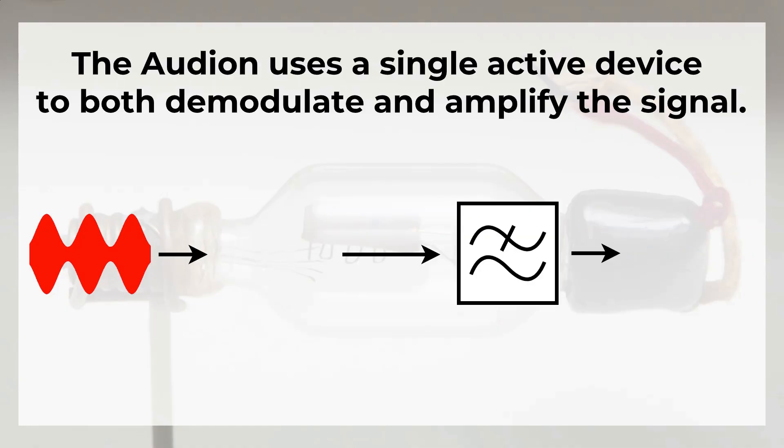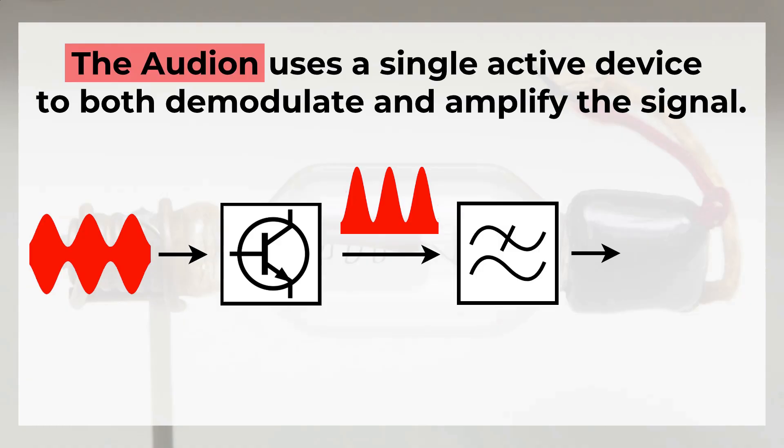But what happens if we use a transistor stage instead of a diode? A much smaller signal is enough for demodulation and this stage also provides amplification. After the low-pass filter we can also obtain the audio frequency signal.